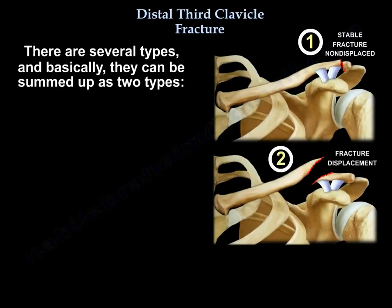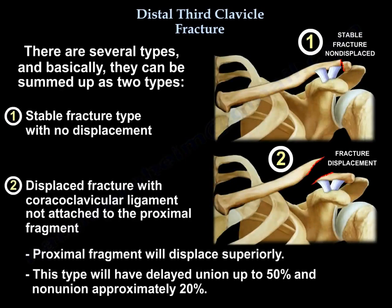There are several types, but it comes down to two types: a type of distal clavicle fracture that is stable with no displacement, and another type where the fracture is displaced with the coracoclavicular ligament not attached to the proximal fragment, causing the proximal fragment to displace superiorly. This type will have delayed union in up to 50% of cases and non-union in approximately 20%.